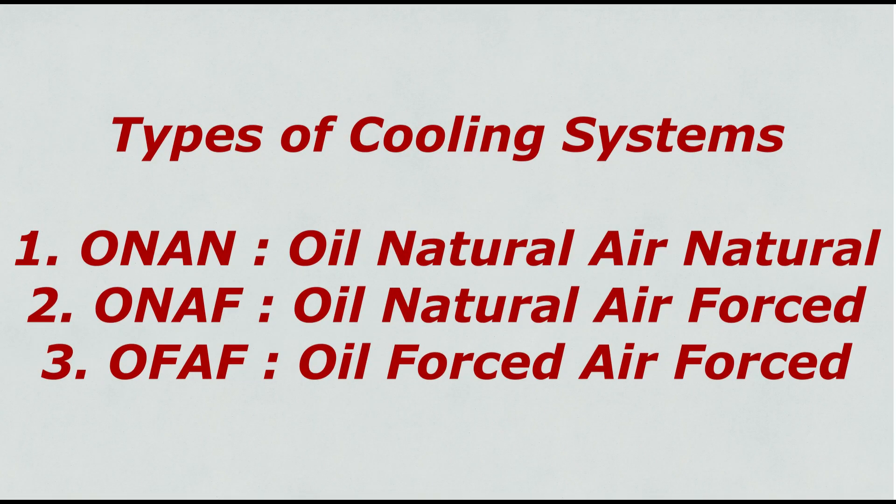On the transformer nameplate, different types of cooling systems are mentioned. Such as: 1. ONAN, means oil natural air natural. 2. ONAF, means oil natural air forced. 3. OFAF, means oil forced air forced. Now let's look at these one by one.